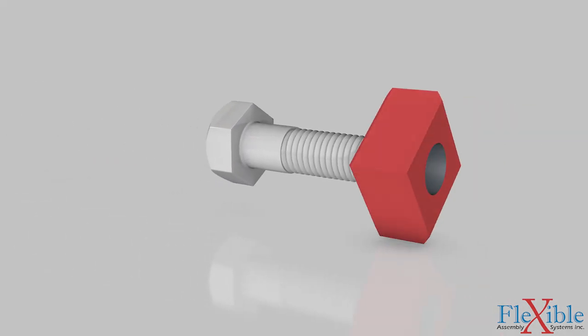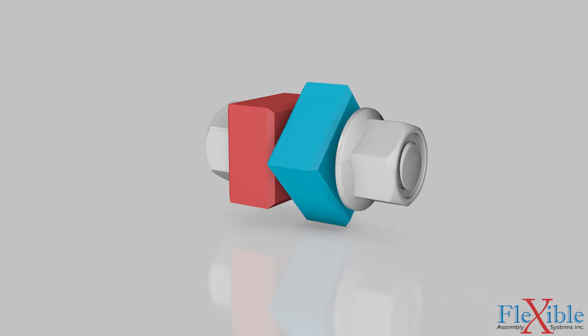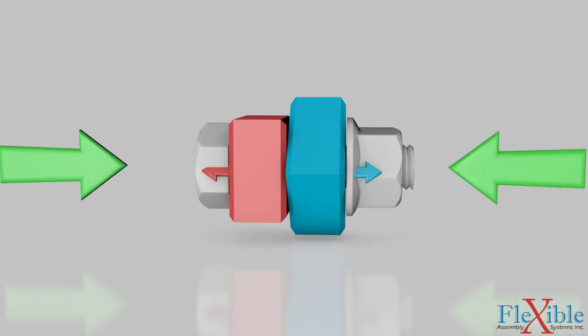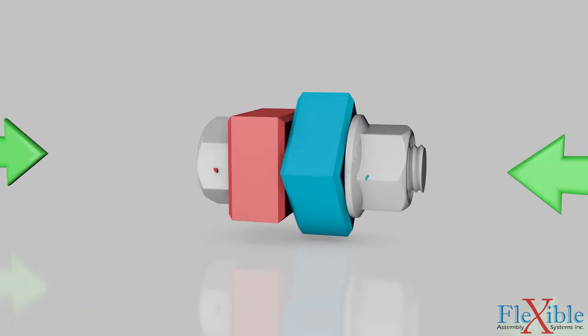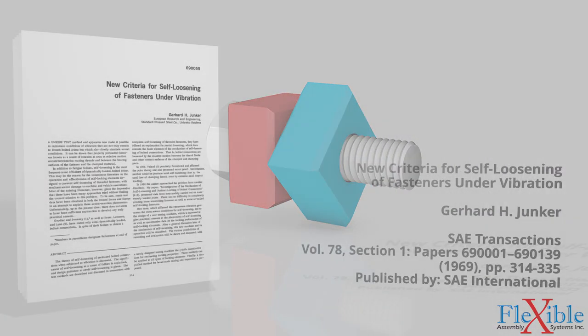For a bolted joint to function properly, it must maintain a constant clamp load. Threaded fasteners are convenient to use since they can be reworked and reused, however they are prone to self-loosening over time when subjected to certain types of vibration.